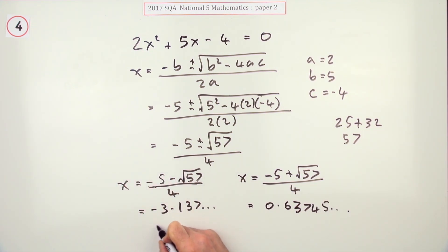But it did say to one decimal place, so that means x equals -3.1, or x equals 0.6 to one decimal place. There we go.